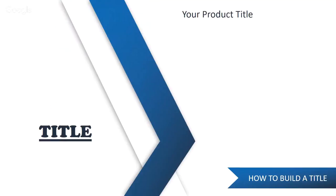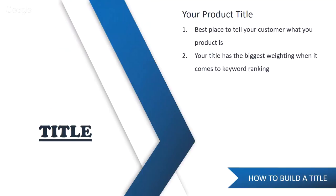Now let's move to the title section and how to build a great title. Your title is the best place to tell customers what the product is. It has the biggest weighting when it comes to keyword ranking. The A9 algorithm looks at your title first and indexes 100% of it — meaning it recognizes all the keywords in your title and matches them up with a potential buyer's search term.